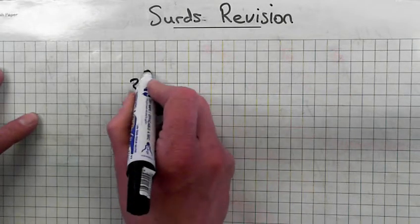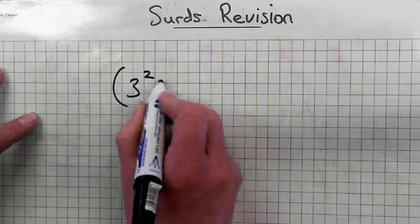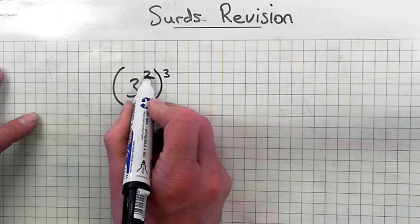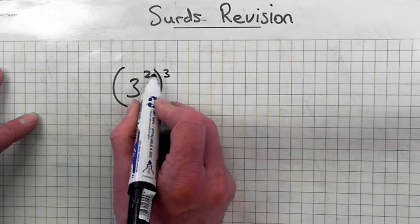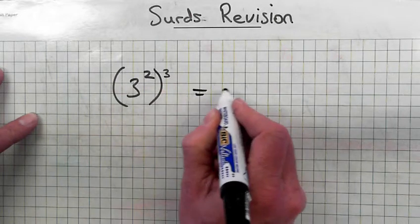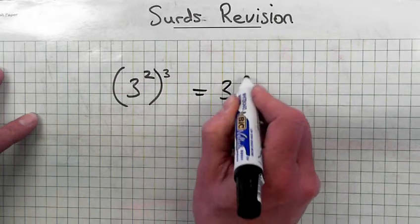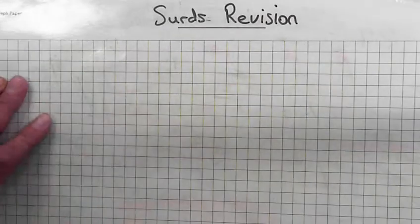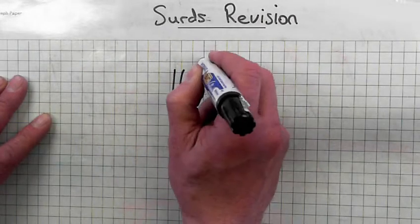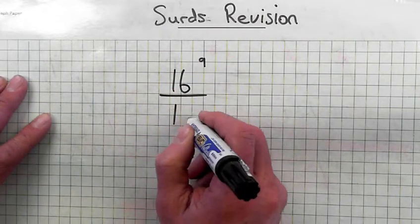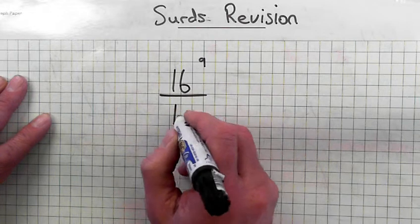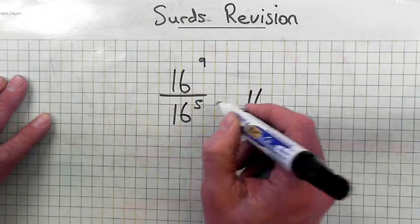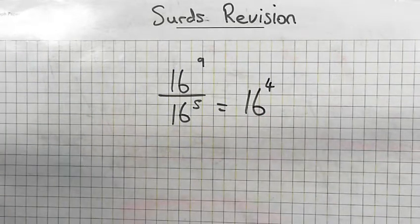Let's say we have three squared in brackets to the power of three. The brackets mean multiply — two times three is six — so three to the power of six. Next example: we have sixteen to the power of nine over sixteen to the power of five. That's sixteen to the power of nine minus five, which is sixteen to the power of four.